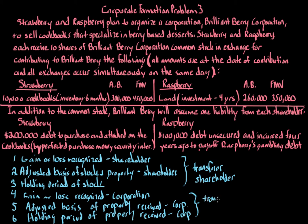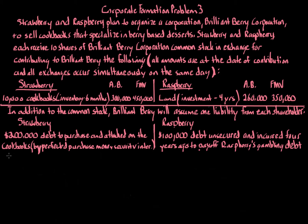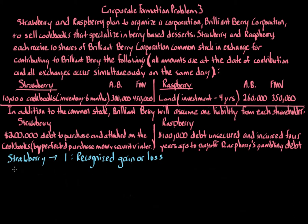We always go in order — steps one, two, and three for each transferor shareholder, then steps four, five, and six for the transferee. We're going to start with step one to determine the recognized gain or loss, beginning with Strawberry. Before we calculate the recognized gain or loss, we have to determine the Section 1001 gateway provision: amount realized minus adjusted basis equals the realized gain or loss. If the realized gain or loss is zero, the recognized gain or loss will be zero as well.